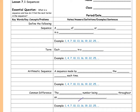We're starting today by doing some vocabulary. A sequence is a list of numbers or objects in a special order — so a list of numbers or objects in a special order.